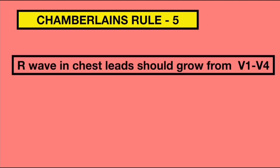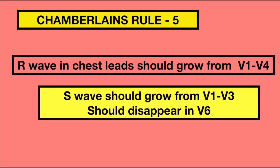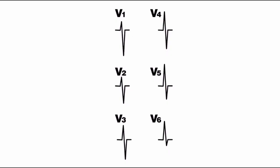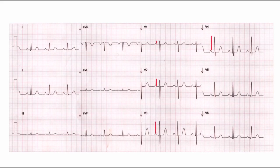Rule 5 states that the R wave in chest leads should increase from V1 to V4, and the S wave should increase from V1 to V3 and should disappear in V6. Here we can see the progressive increase in R and S waves. This is the progression of R wave from V1 to V4. You can also see that the S wave increases from V1 to V2, but in lead V6 it has disappeared.